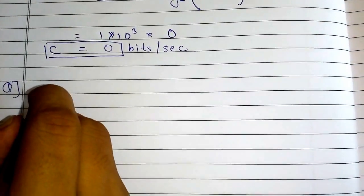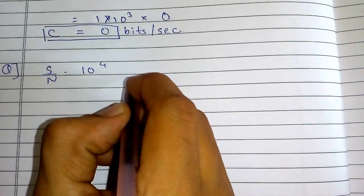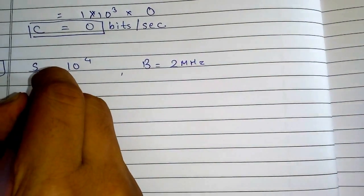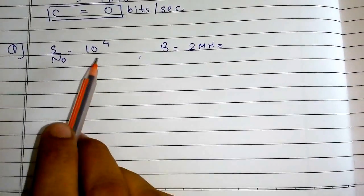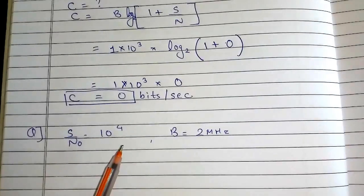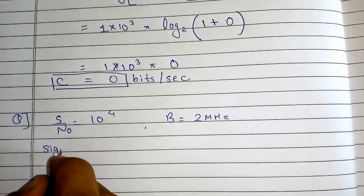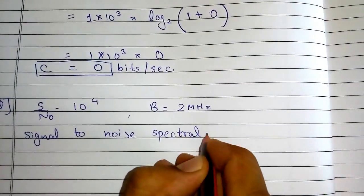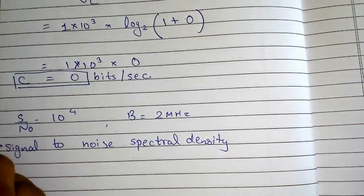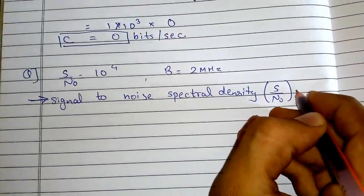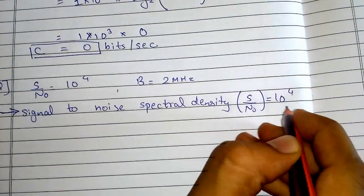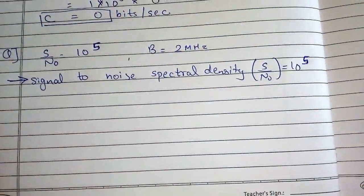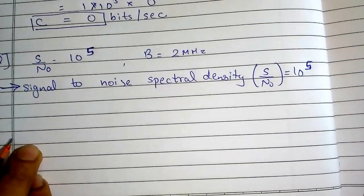What if I am given S/N = 10⁴ and bandwidth B = 2 megahertz? But note it is S/N₀, not S/N. How to differentiate: if signal-to-noise spectral density is mentioned in the question, then I have to assume it is S/N₀. Let's take S/N₀ equal to 10⁵ for easier calculation. Let's solve it further.